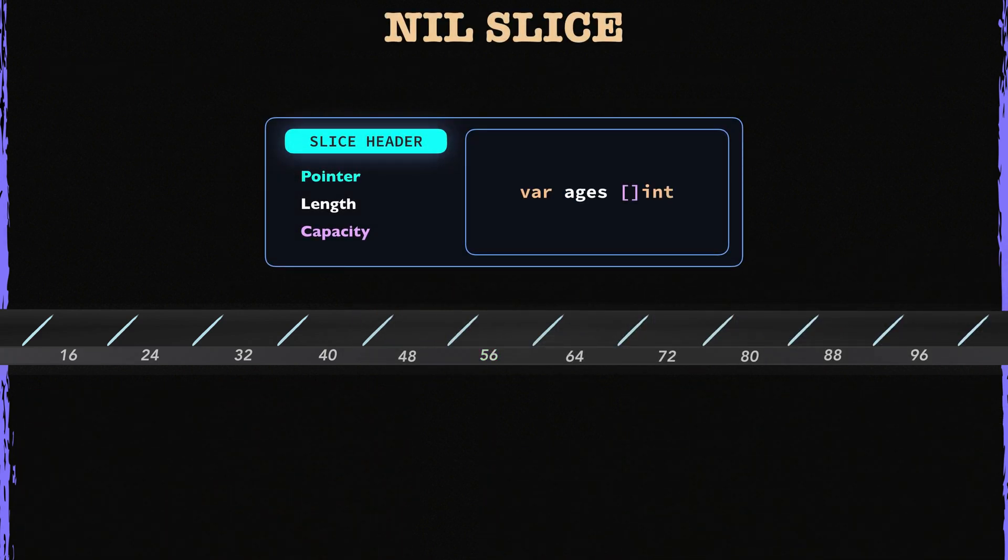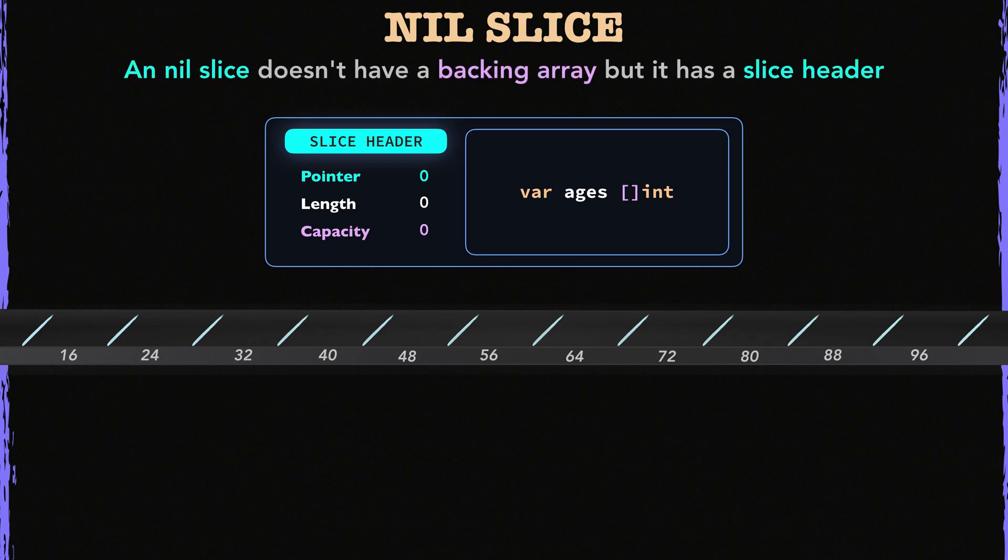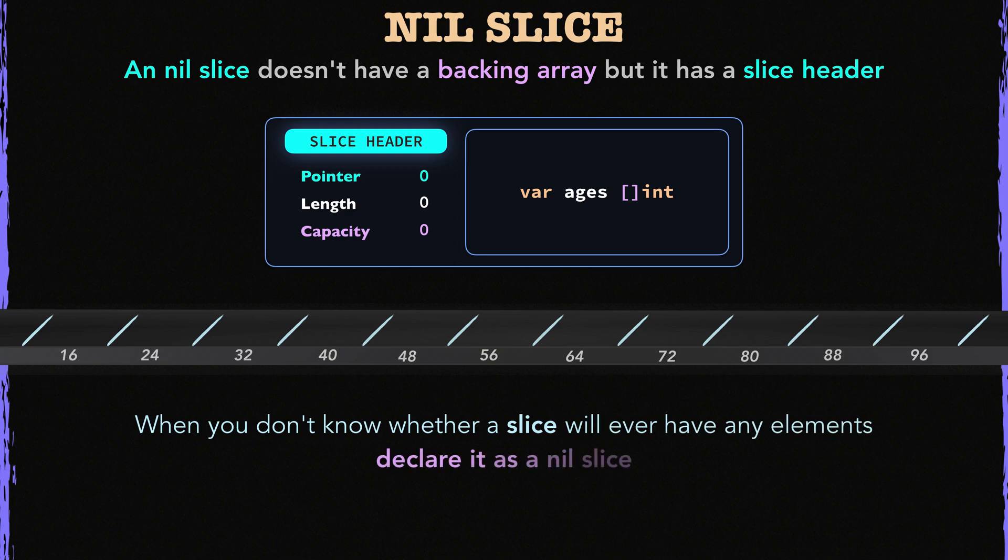Let's take a look at a nil slice. A nil slice doesn't have a backing array, but it has a slice header. It is because a slice value always has a slice header. Remember, a slice value means slice header. The pointer field is 0, this means that it doesn't allocate new memory for its backing array because it doesn't have one. That is why you should declare a nil slice when you don't know whether you're gonna add new elements to the slice or not. You never want to waste unnecessary memory space.